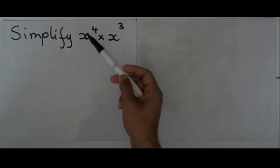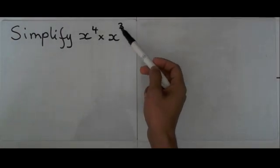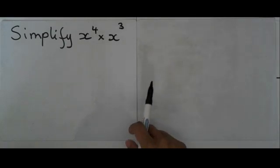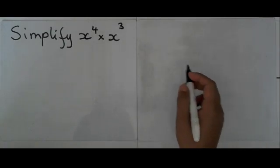Alright, on this question I want to simplify x to the power 4 times x to the power 3. And to do that you need to use one of the index laws.